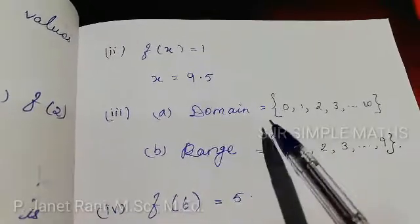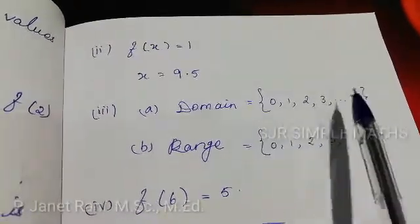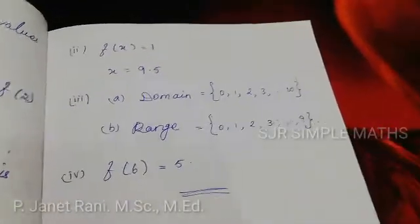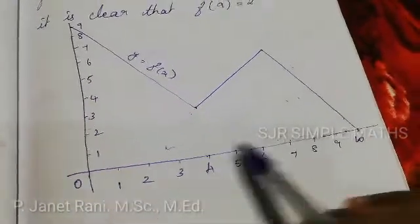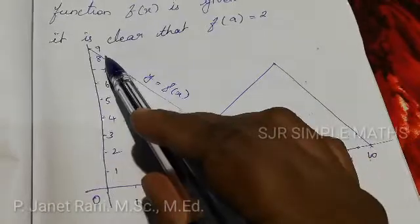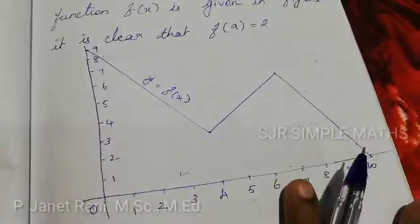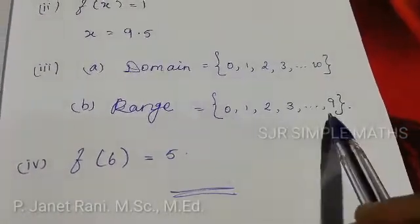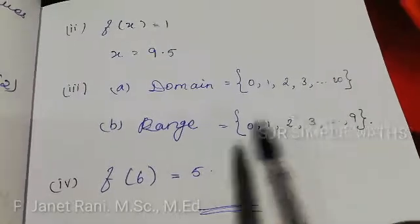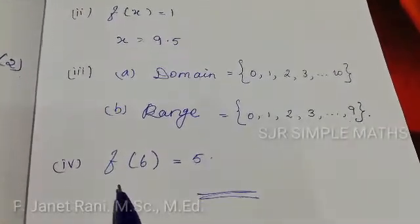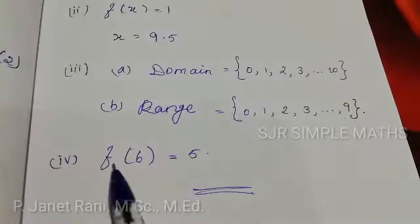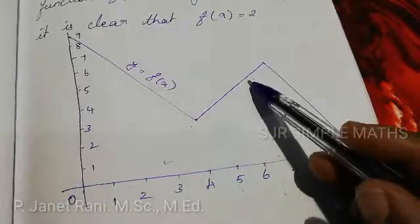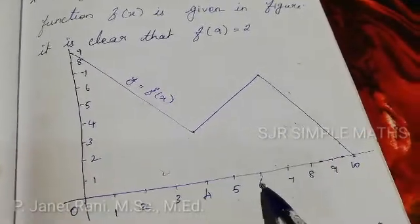The domain is {x | 0 ≤ x ≤ 10}. The range is {y | 0 ≤ y ≤ 9}. Fourth part: what is the image of 6 under f? f(6) = 5. So f(6) is 5.